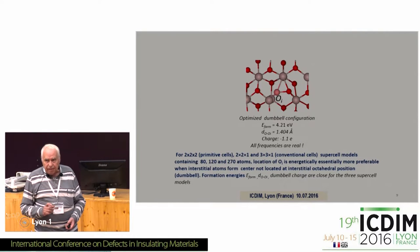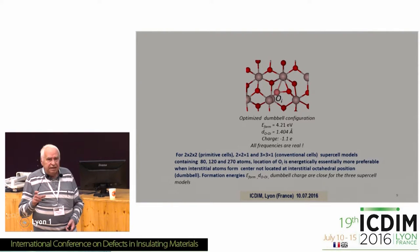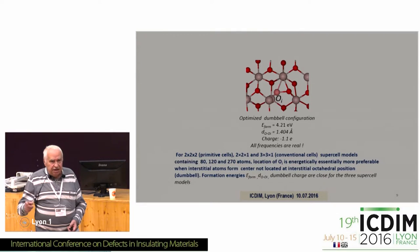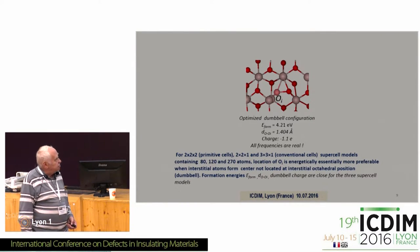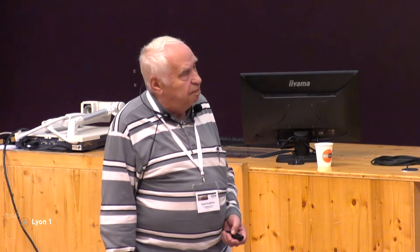For the supercell model, it is always necessary to investigate the influence of supercell size, since it defines the distance between point defects in neighboring supercells. We investigated convergence for three supercells of 80, 120, and 270 atoms, and the convergence was good with very small differences. Importantly, the dumbbell configuration is the most energetically favorable in corundum compared with the oxygen vacancy and the Frenkel pair. The formation energy of the high-symmetry starting position is also given for comparison.